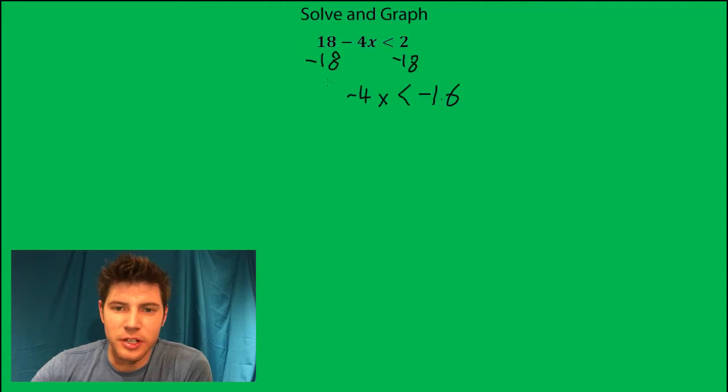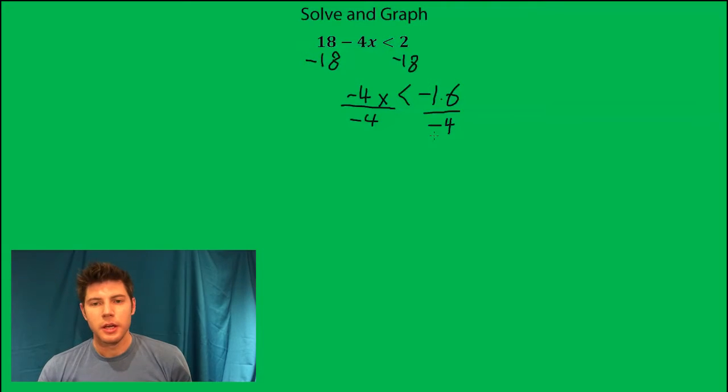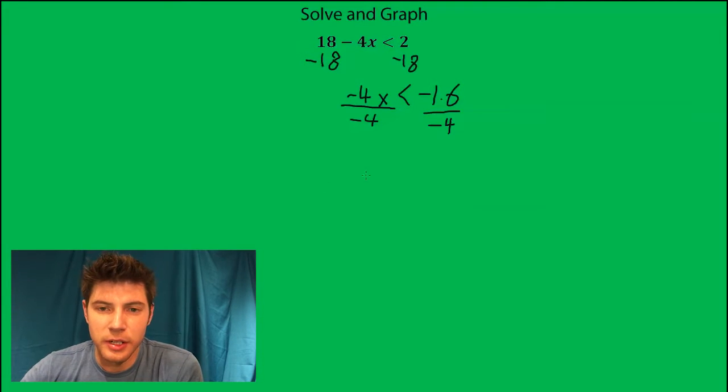And then next you want to divide both sides by negative 4. When you divide by negative 4, you get x here and you get 4 here.